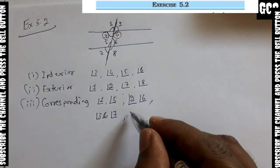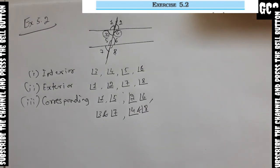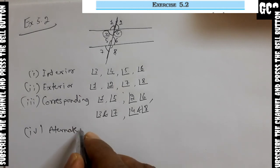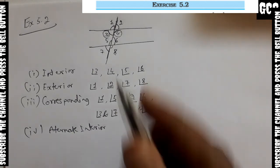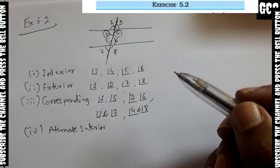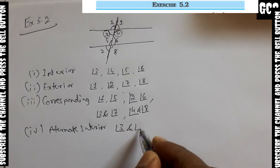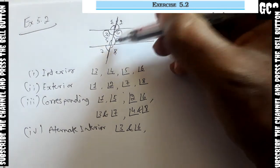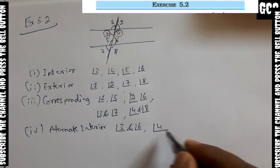Also, angle 3 and angle 7 are corresponding, and angle 4 and angle 8 are corresponding. The fourth one is alternate interior angles. Alternate interior angles: angle 3 and angle 6 are alternate interior angles, and angle 4 and angle 5 are also alternate interior angles — both together are 180 degrees.